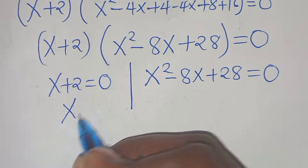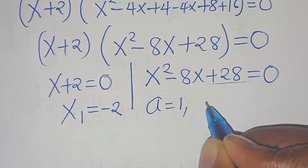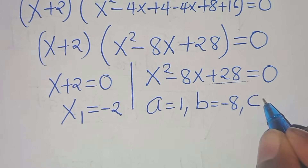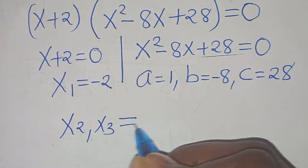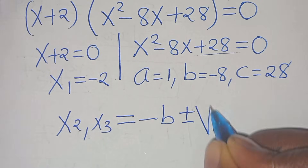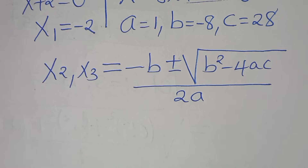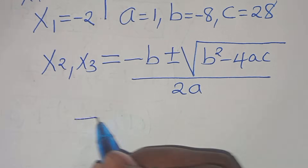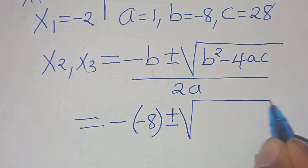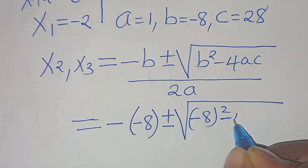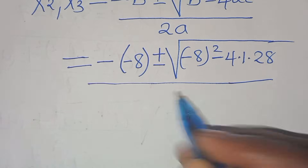From the first part, x1 is equal to minus 2. The second part is a quadratic equation with a equal to 1, b equal to minus 8, and c equal to 28. We can solve for x2 and x3 by applying the quadratic formula: minus b plus or minus the square root of b squared minus 4ac, everything divided by 2 times a. Substituting: minus minus 8 plus or minus the square root of minus 8 squared minus 4 times 1 times 28, divided by 2 times 1.